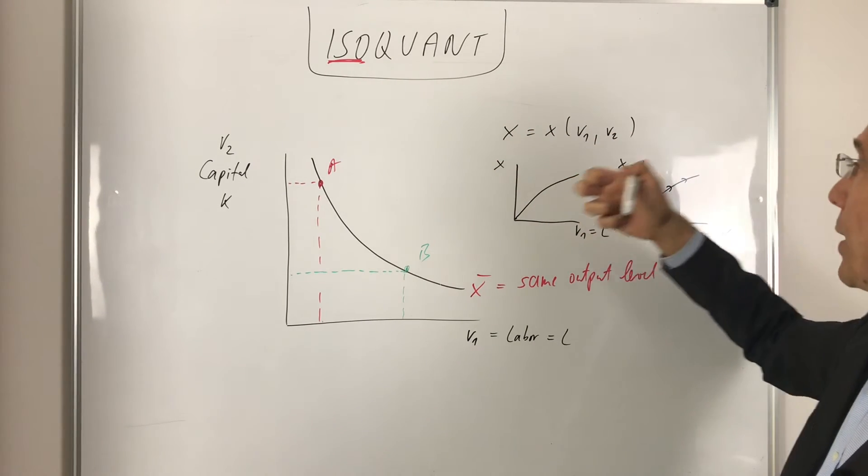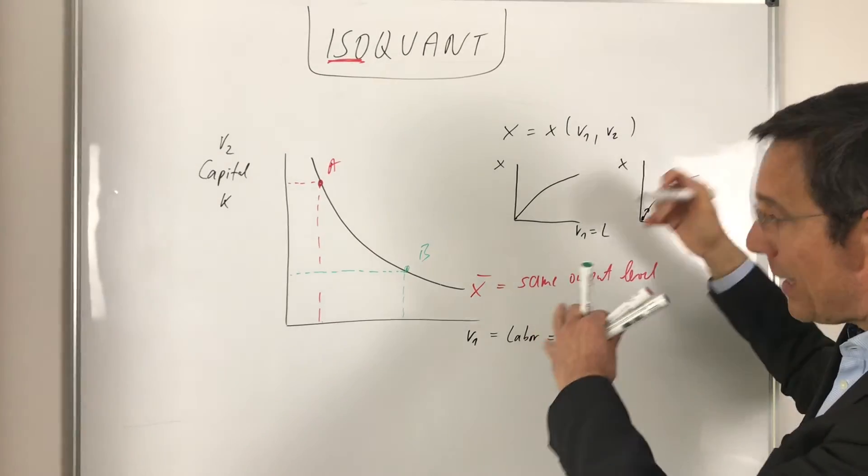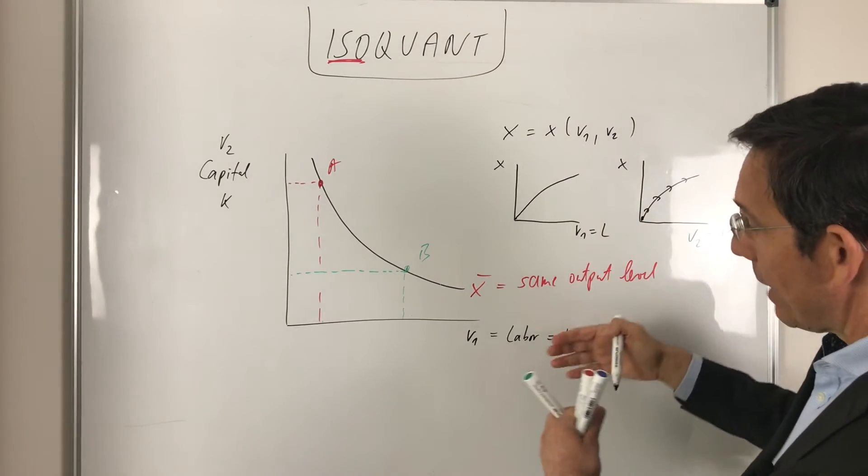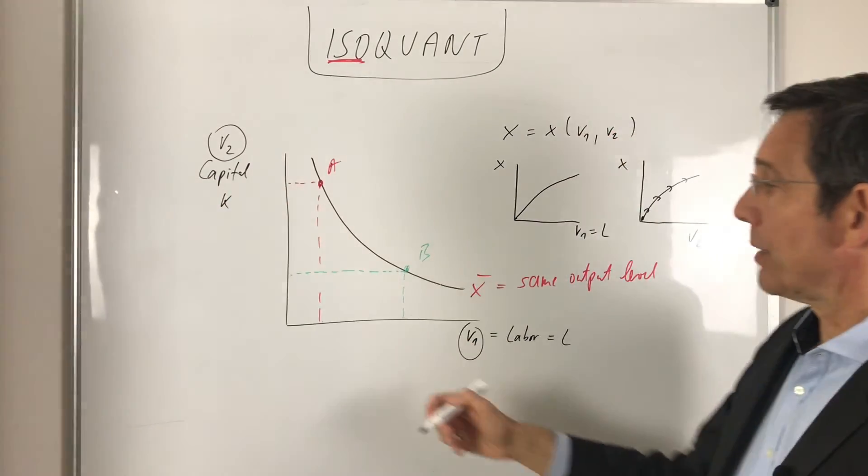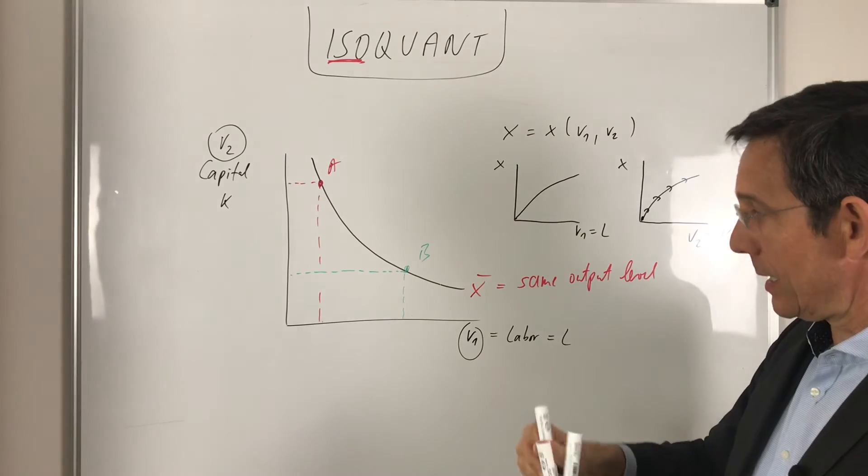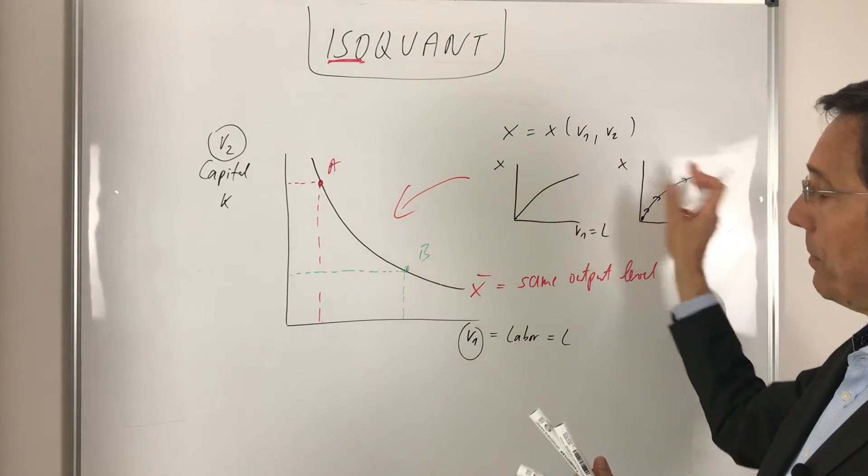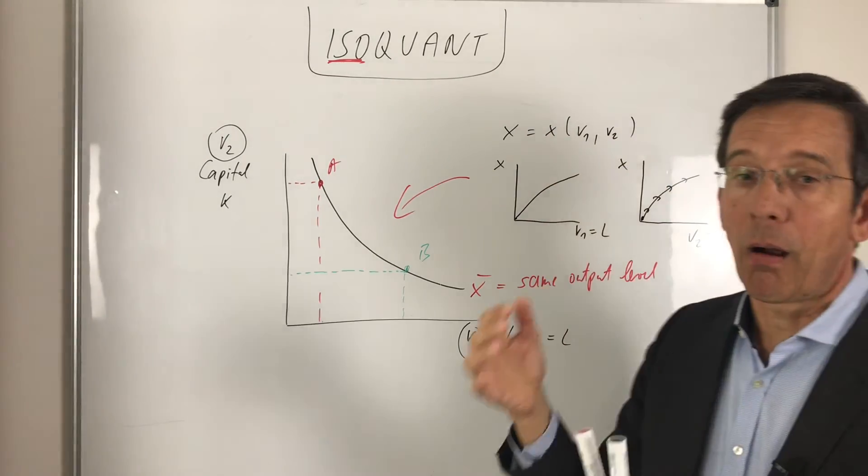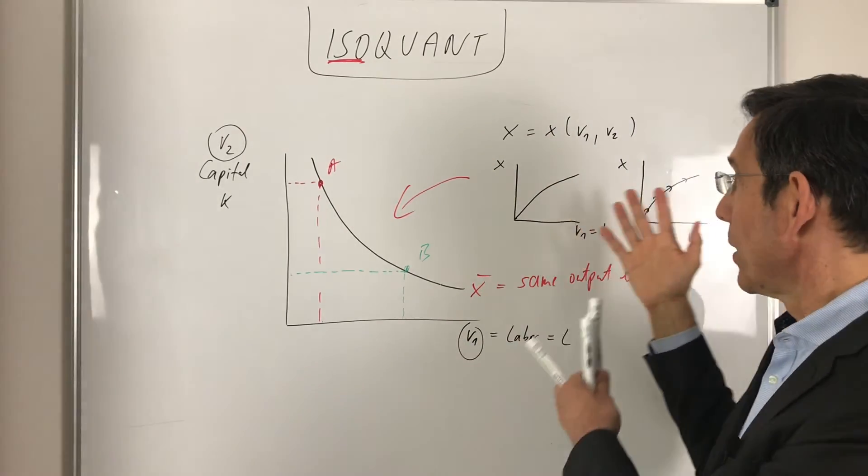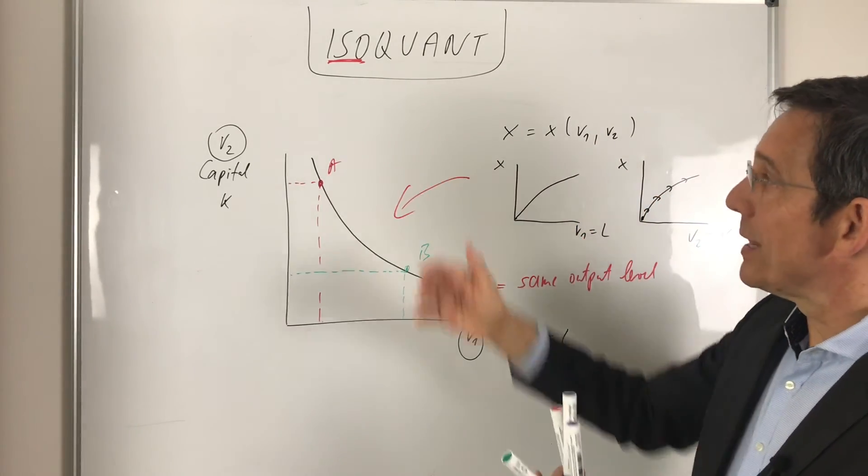Production function number one, production function number two, put them together and bring them into a v1, v2 diagram, yield this isoquant, right? So you should see the combination, that these two production functions are the core input for the isoquant.